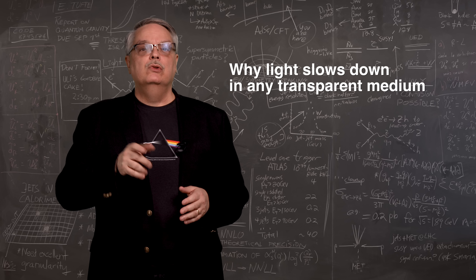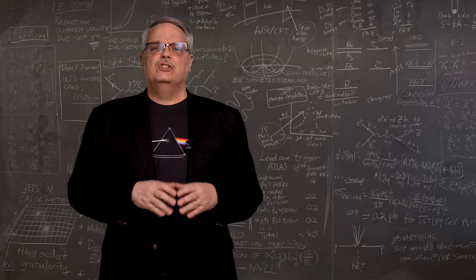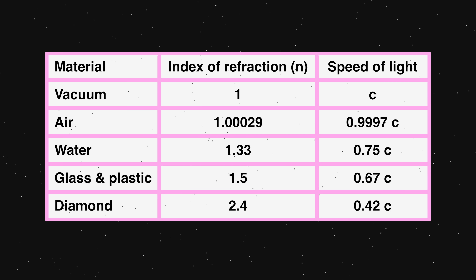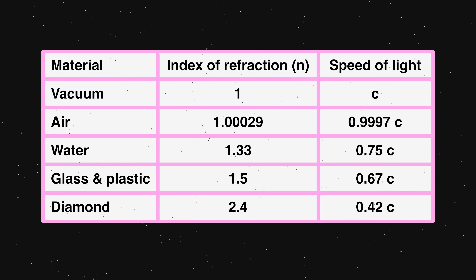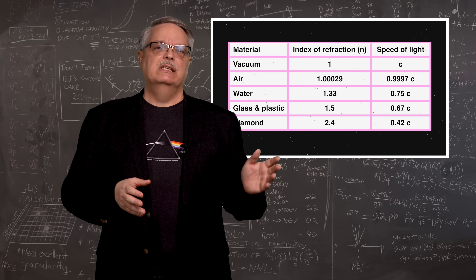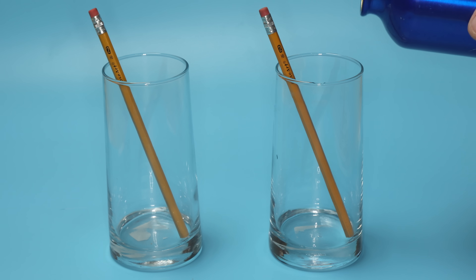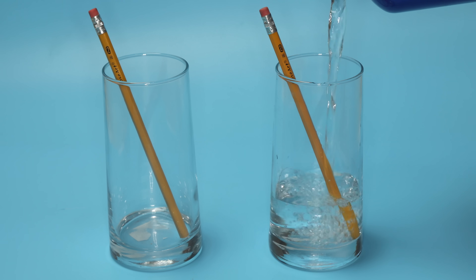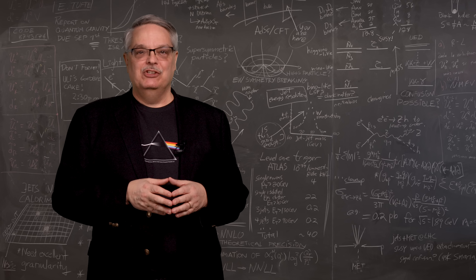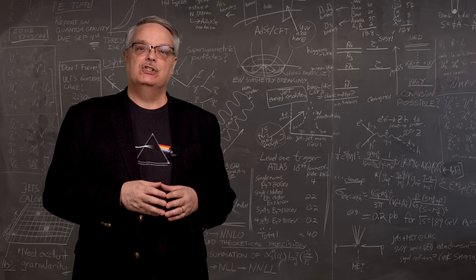If you ever took a physics class, you learned about the index of refraction of a material. The index of refraction is just a fancy term for how much light slows down in that material. It's always written as little n, and is a number greater than one. The speed of light in a material is just the speed of light in a vacuum divided by the index of refraction. I put a table here to give you a sense of how much light can slow down in common materials. This slowing down is the reason that objects look bent when stuck in water — it's because the path the light follows bends when it enters or exits water. It's the reason that you can get pictures like this one here, and I should let you know that no physics teachers were harmed in shooting that photo.